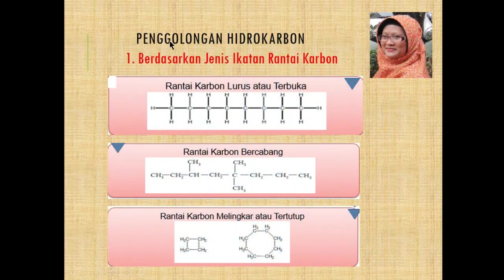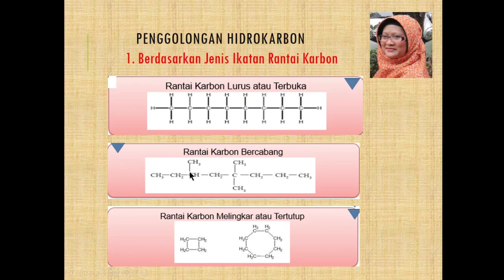Berikutnya, penggolongan hidrokarbon. Yang pertama, berdasarkan jenis ikatan rantai karbon, ada tiga: rantai karbon lurus atau terbuka (C berikatan dengan C terus lurus), rantai karbon bercabang (C berikatan dengan C kemudian ada cabangnya — bisa satu, dua, tiga, bahkan empat cabang), dan rantai karbon melingkar atau tertutup, di mana bentuk rantai karbon berbentuk siklus atau melingkar.